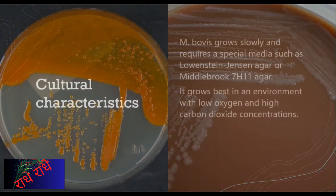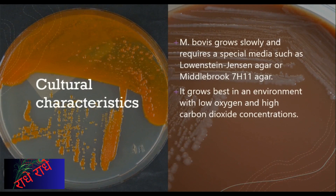Mycobacterium bovis is a species of bacteria that has some very specific cultural characteristics that need to be accounted for in order to cultivate it. As it grows slowly, Lowenstein-Jensen agar or Middlebrook 7H11 agar must be used. M. bovis also prefers an environment with low oxygen and high carbon dioxide concentrations in order to develop properly.